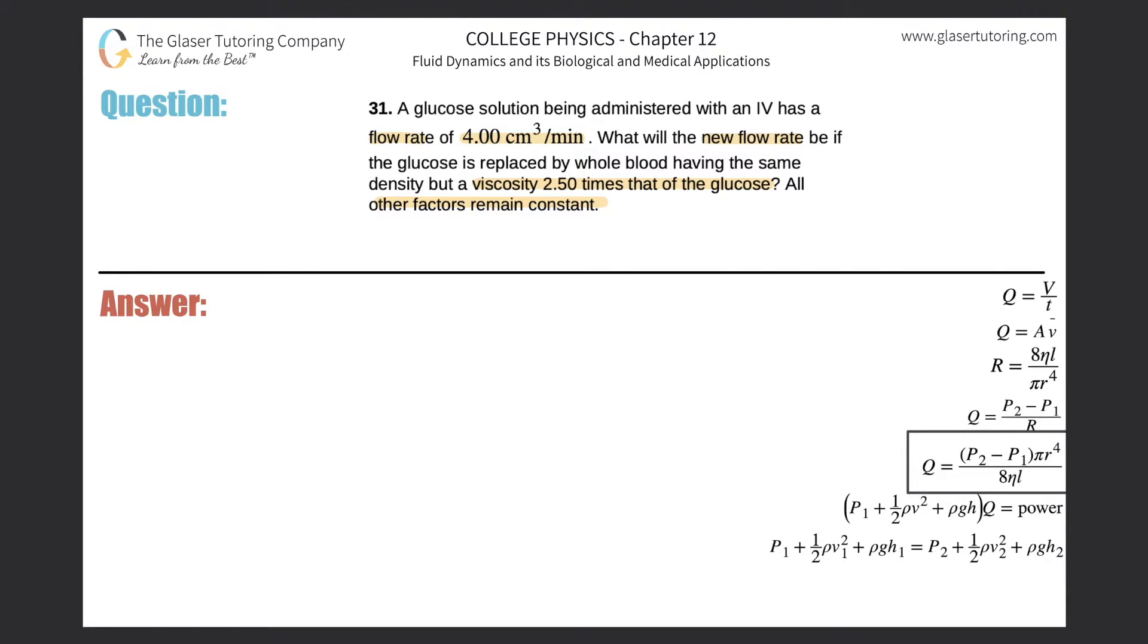So it tells us that the flow rate and the viscosity are inversely related. In other words if this viscosity down here eta goes up, that's the Greek letter, if it goes up Q will go down. Since this lives in the denominator when this value goes up it reduces the entire fraction so Q goes down.